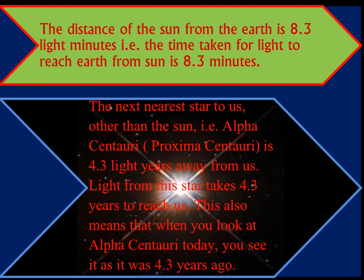The next nearest star to Earth, other than the sun, is Alpha Centauri or Proxima Centauri. The distance of Alpha Centauri from Earth is equal to 4.3 light years. That means the light from this star takes 4.3 years to reach here. This also means that when you look at Alpha Centauri, you are seeing its image from 4.3 years back. Then what about the millions of other stars? We are able to see their past images from many, many years back.